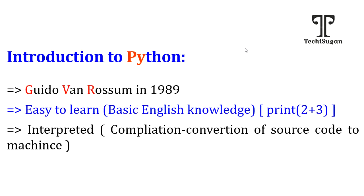In the case of a compiler-based programming language, when there are 10 lines of code, all 10 lines are converted to machine code, and at the end of the conversion it will throw a success message or display whatever errors exist. Python comes under interpreter-based programming language.